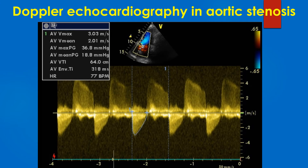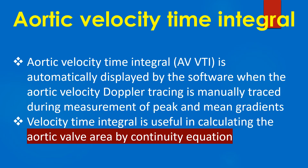The image also shows an aortic regurgitation jet which is above the baseline, but the measurements of the AR jet are not shown here. Aortic velocity time integral is automatically displayed by the software when the aortic velocity Doppler tracing is manually traced during measurement of peak and mean gradients.